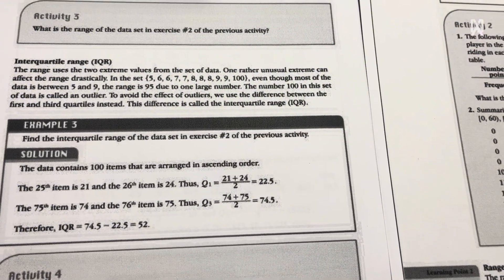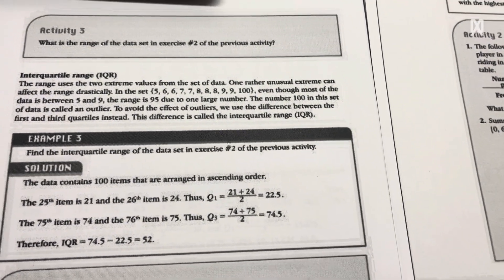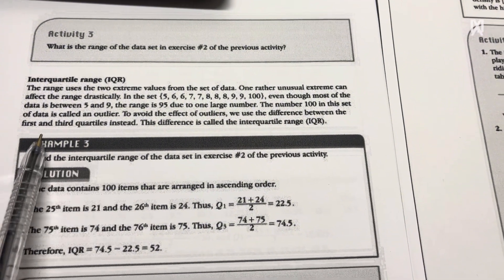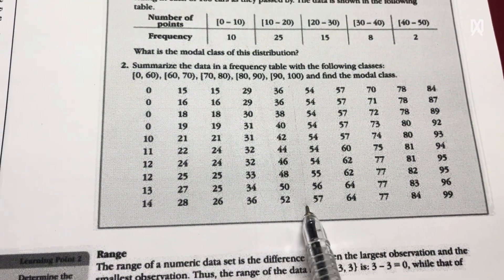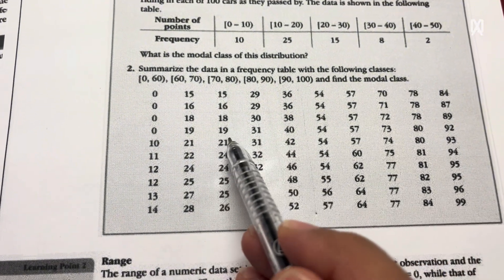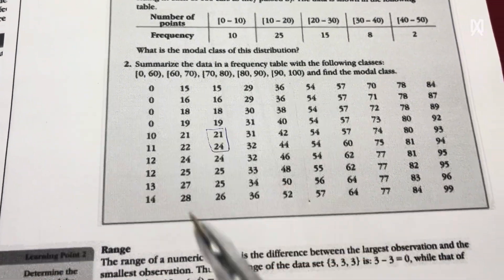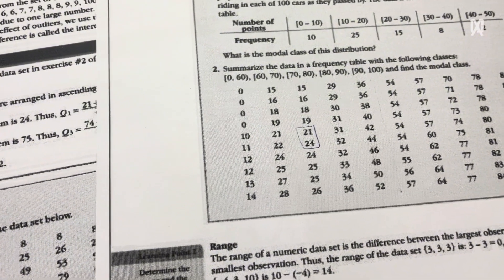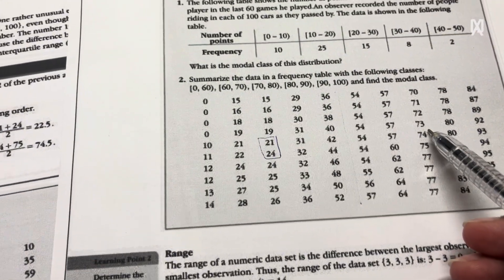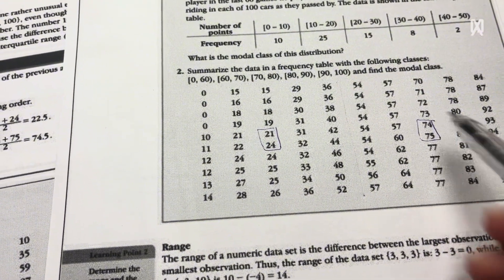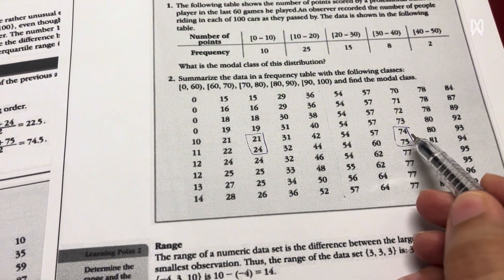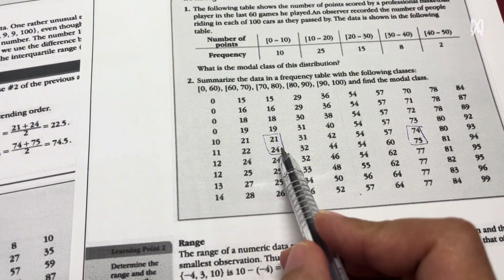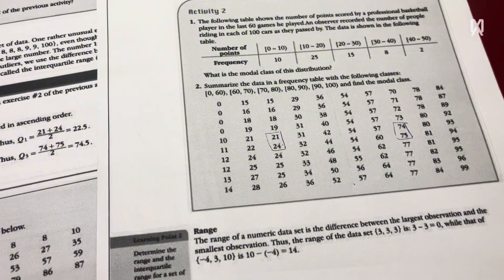The interquartile is the difference between the third quartile minus the first quartile. The third quartile is the one that happens at 75%, and the first quartile is the one that happens at 25%. So if you take this example, I will split the data in half. My first quartile will happen in the middle of this half. The middle values are 21 and 24, so the average between 21 and 24 is 22.5. And the third quartile is the average of 74 and 75 divided by 2, so it will be 74.5. So my third quartile is 74.5 and my first quartile is 22.5. 74.5 minus 22.5 is the interquartile.